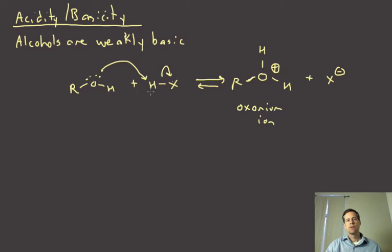What we'd like to know then is exactly where does this equilibrium lie. And the most convenient way to do this is, rather than talking about the basicity of the alcohol, we can talk about the acidity of the protonated oxonium ion. So we're just describing this equilibrium by talking about the pKa of this material.